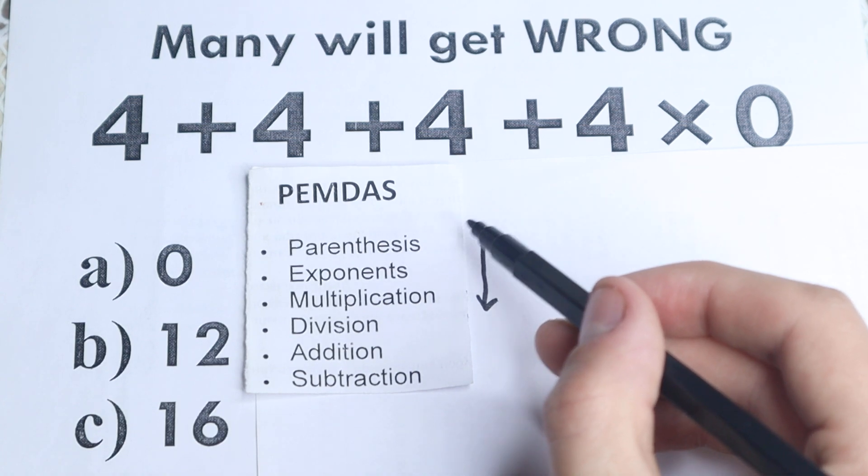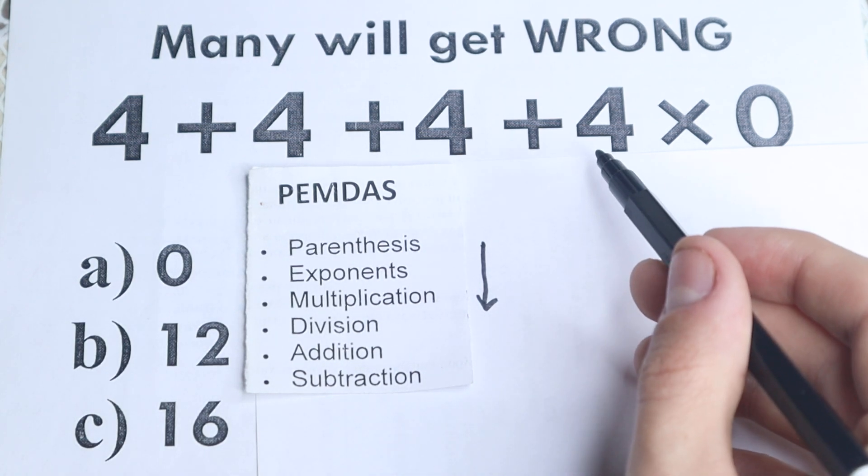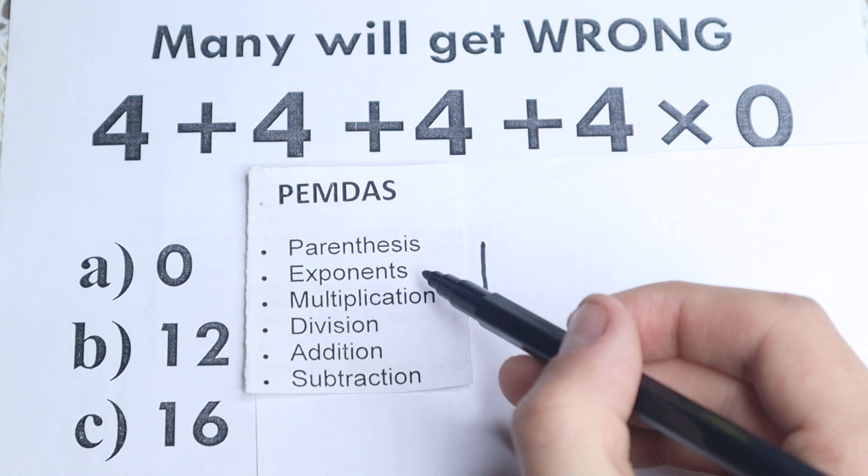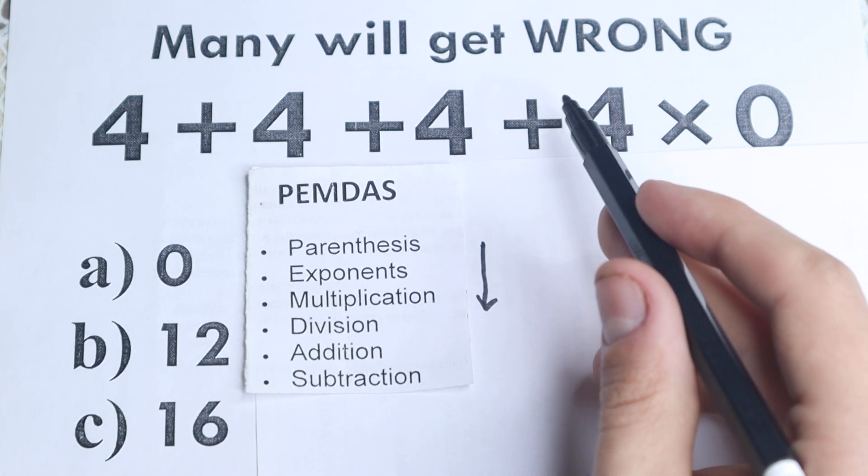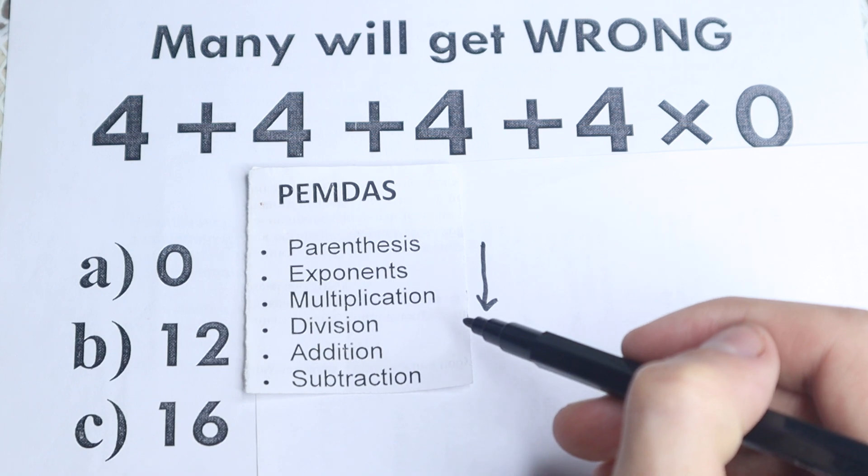And the first step is parentheses. In our case we don't have any parentheses, so we just skip this part and go to the next step. Exponents, we don't have squares, cubes, so we just skip this part.